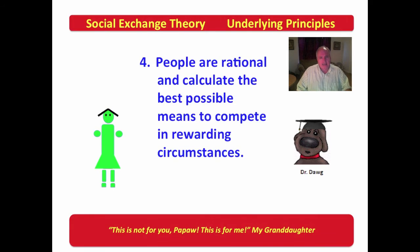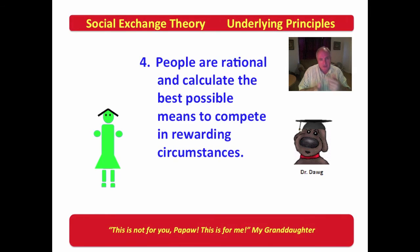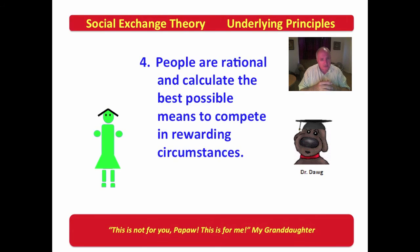People are rational and calculate the best possible means to compete in rewarding circumstances. They're not only rational, but they're looking for the best possible means to get them where they want to be — to bring about the rewarding circumstances that are sought. People are clever; even little children are clever. They want to bring about exactly what they want so they may lay hold on the rewards they desire, rationally calculating the best possible means.